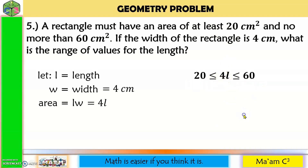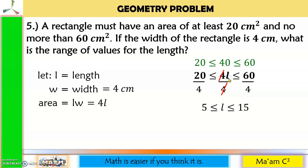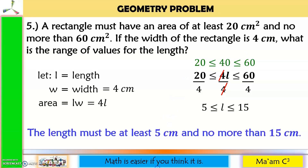To solve for L, divide everything by 4. 20 divided by 4 is 5, and 60 divided by 4 is 15, so 5 is less than or equal to L is less than or equal to 15. Checking with L equals 10: 4 times 10 is 40, which is less than 60 but greater than 20. Therefore, the length must be at least 5 cm and no more than 15 cm.